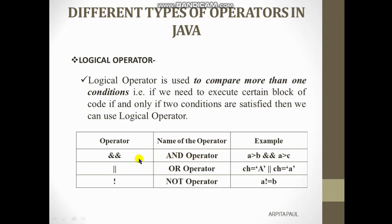The next one is the logical OR operator. You will find this symbol (||) on your keyboard just above the Enter key. In case of the OR operator, if any one of the conditions is true, the output is true. For example, in vowel checking — if the vowel is written in capital or small letter, in both cases it is a vowel. So for vowel checking we use the logical OR operator.